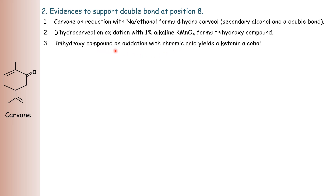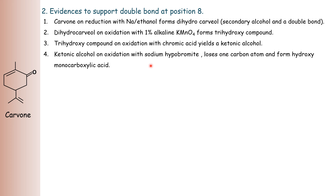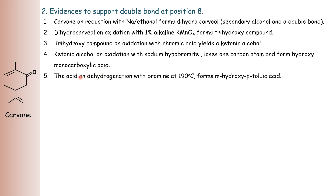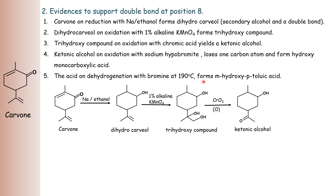Another evidence is that dihydrocarbiol on oxidation with one percent alkaline KMnO4 forms a trihydroxy compound. This trihydroxy compound upon oxidation with chromic acid gives a ketonic alcohol. That ketonic alcohol upon oxidation with sodium hypoiodite loses one carbon atom and forms a hydroxy monocarboxylic acid. This monocarboxylic acid upon dehydrogenation with bromine at 190 degrees Celsius forms meta-hydroxy para-toluic acid.